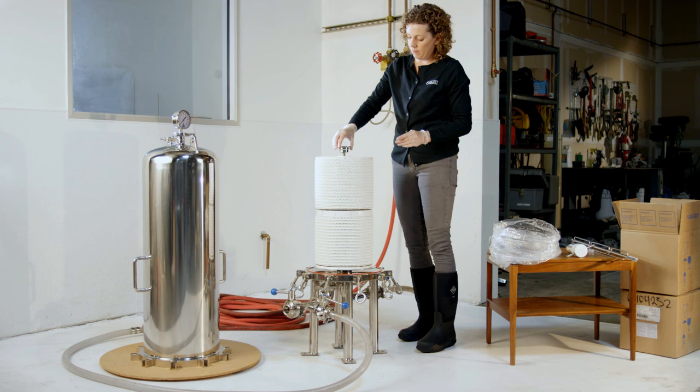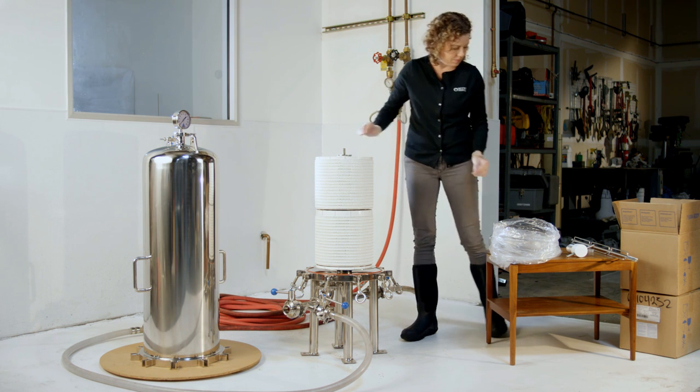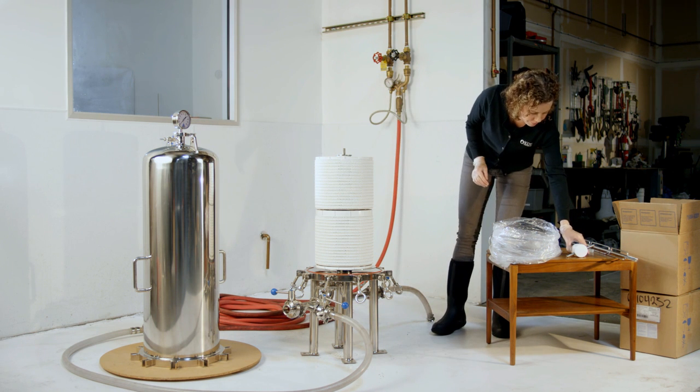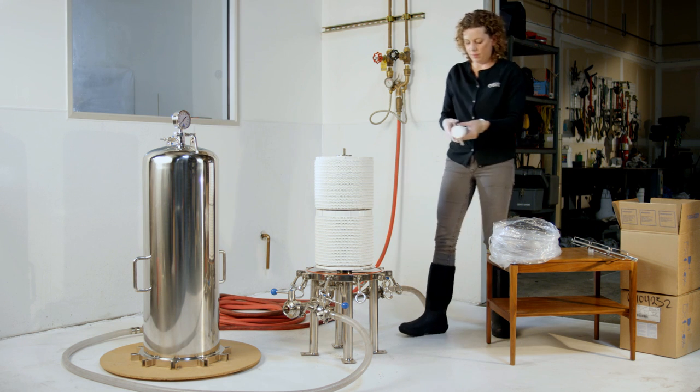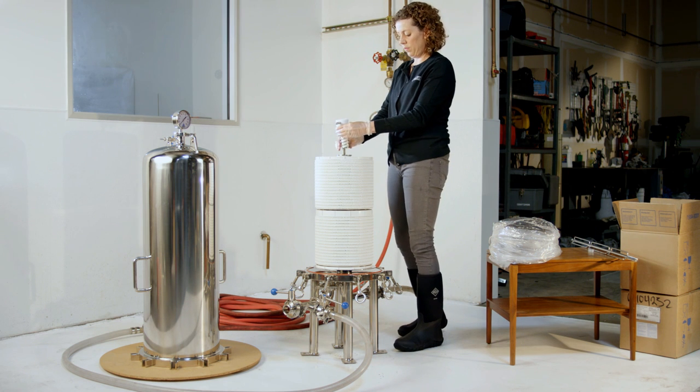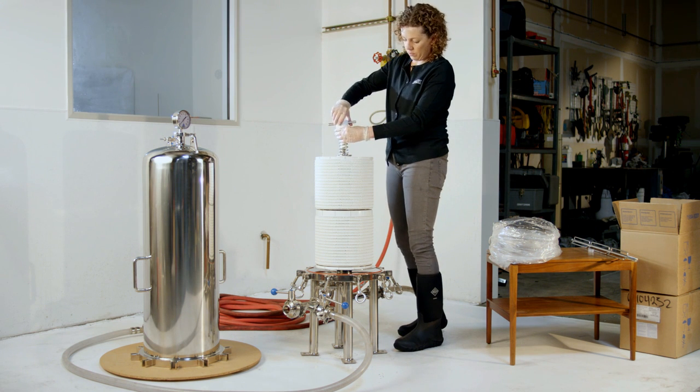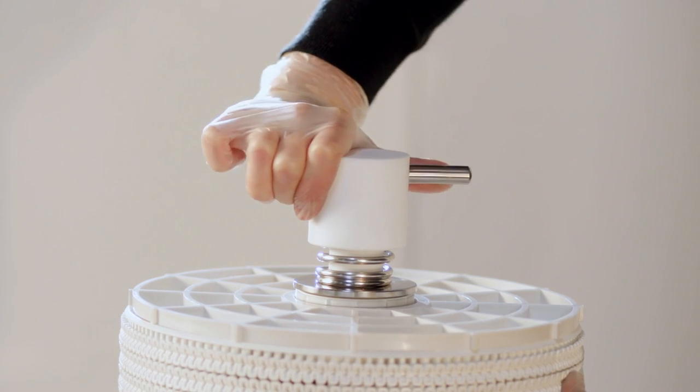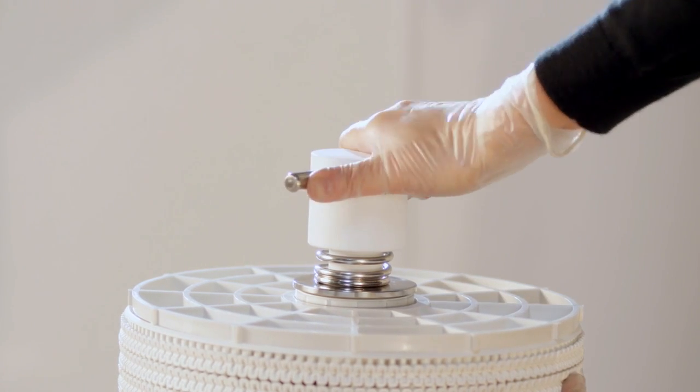At this point, check all contact points between modules and the bottom adapter to ensure there's no obstruction. Apply tightening nut and spring to the top of the center post. Continue to tighten until spring is rigid and the lenticular module is securely compressed. Do not over-tighten.